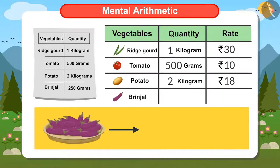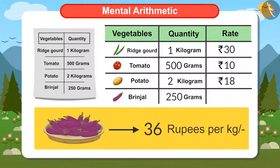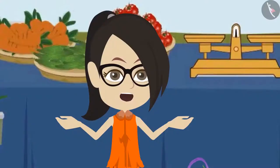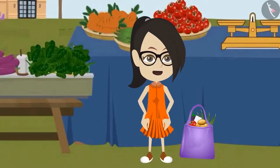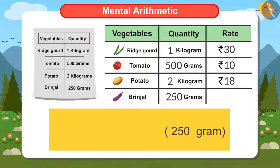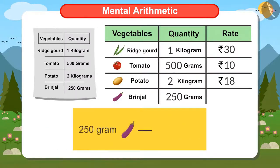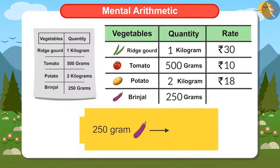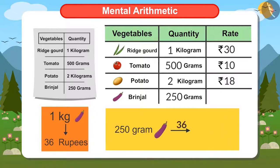Brinjal costs 36 rupees a kilo. What do I have to do to find the price of 250 grams of brinjal? Can you try and tell me? See, 250 grams is a quarter of a kilo. So to find the value of 250 grams of brinjal, we have to divide the price of a kilo of brinjal by 4. That means 36 divided by 4. Four 9s are 36, so the price of 250 grams of brinjal is 9 rupees.